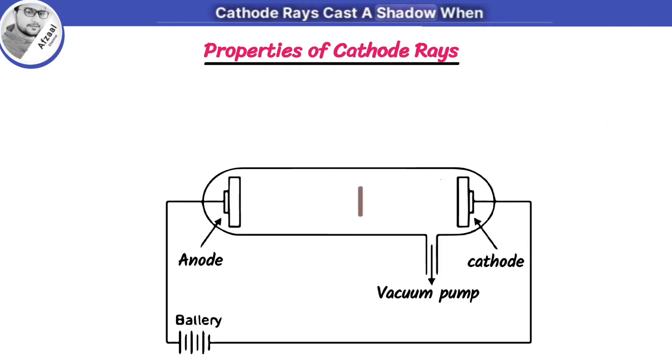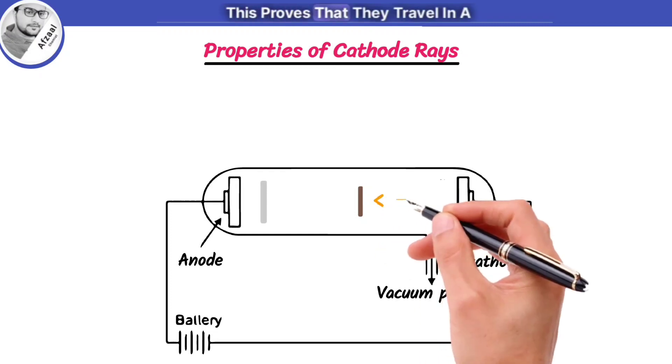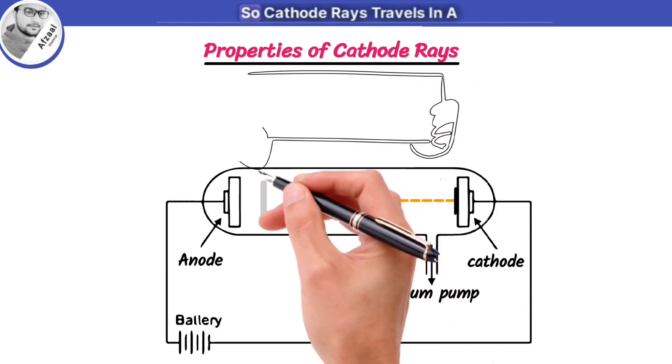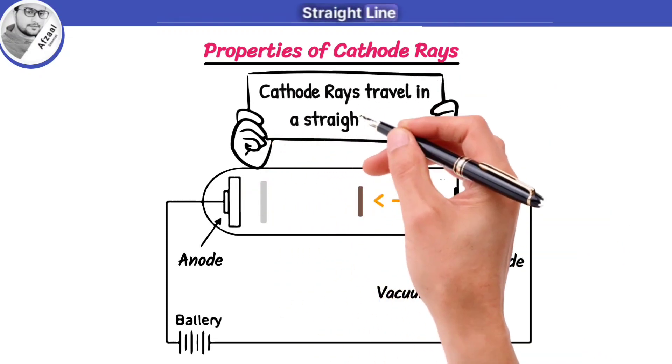Cathode rays cast a shadow when opaque objects are placed in their path. This proves that they travel in a straight line perpendicular to the surface of cathode.